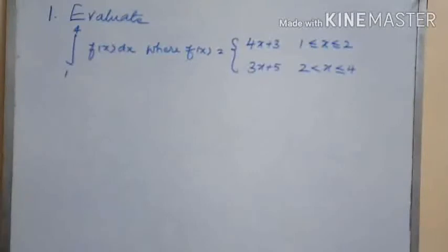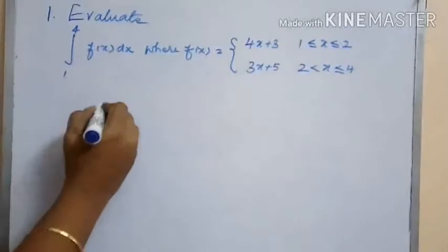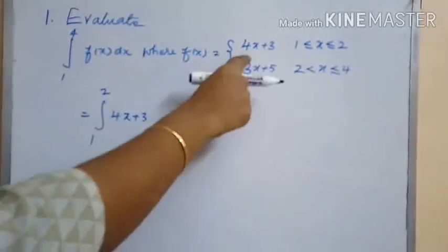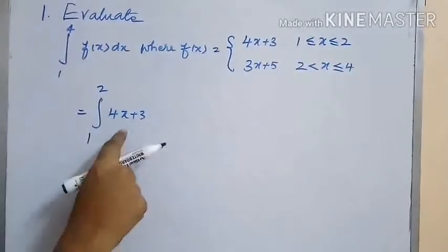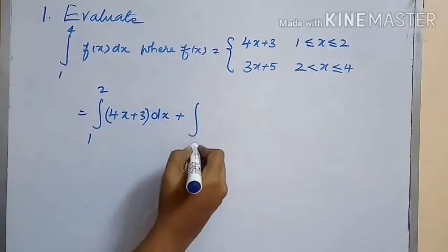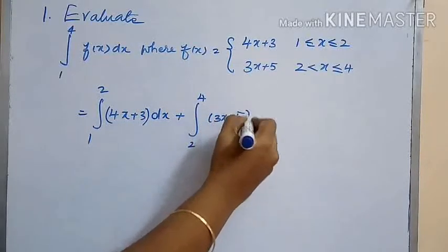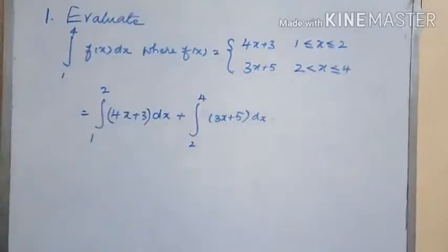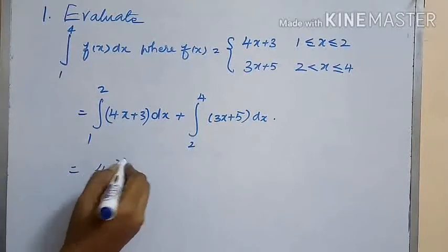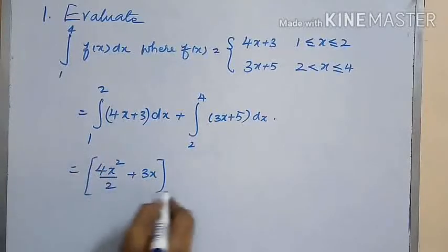In today's session of integral calculus, the first problem is: evaluate the integral from 1 to 4 of f(x) dx, where f(x) equals 4x plus 3 in the limits 1 to 2, and 3x plus 5 in the limits 2 to 4. We can write this as the integral from 1 to 2 of (4x + 3) dx plus the integral from 2 to 4 of (3x + 5) dx.